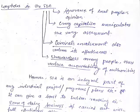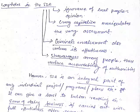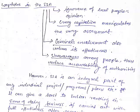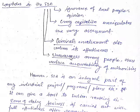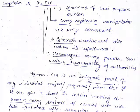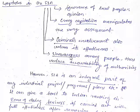Problems with SIA include ignorance of local people or popular opinion. Capitalism can manipulate the very assessment process. Criminal or corrupt involvement also reduces its effectiveness, and the unevenness in application reduces accountability of authorities.